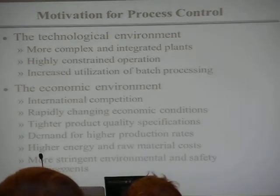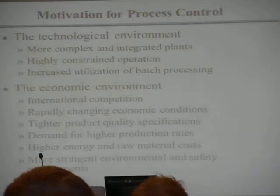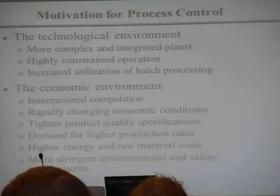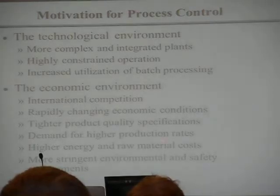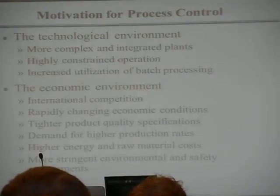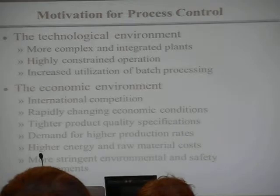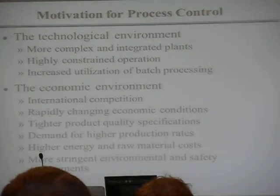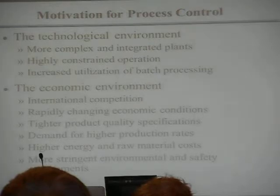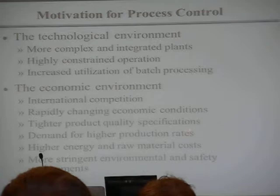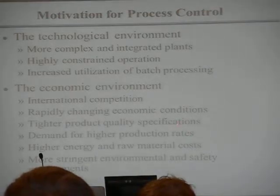There are also rapidly changing economic conditions, especially in terms of raw materials. A typical arrangement is a refinery that makes raw materials for a chemical plant — that's what makes ExxonMobil so profitable. Depending on economics, the feedstock to the plant can change a lot, like the price of a barrel of oil. There are also tighter product specifications. For a typical polymer, many companies around the world can make it, so you have to meet the customer's product specifications exactly.